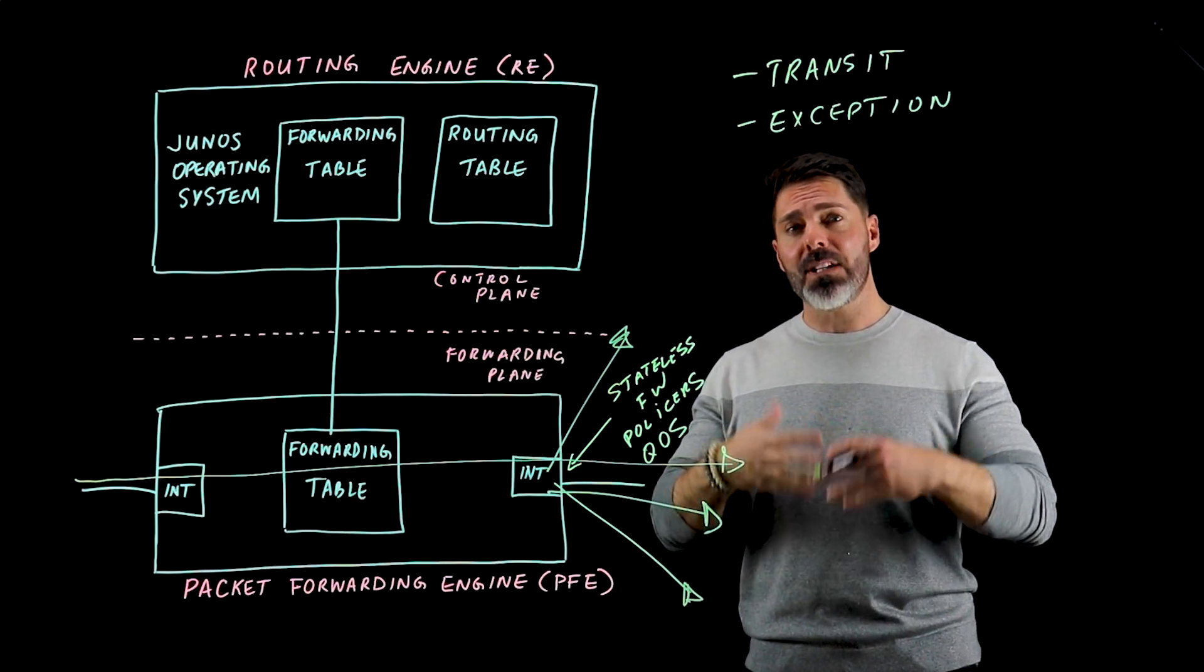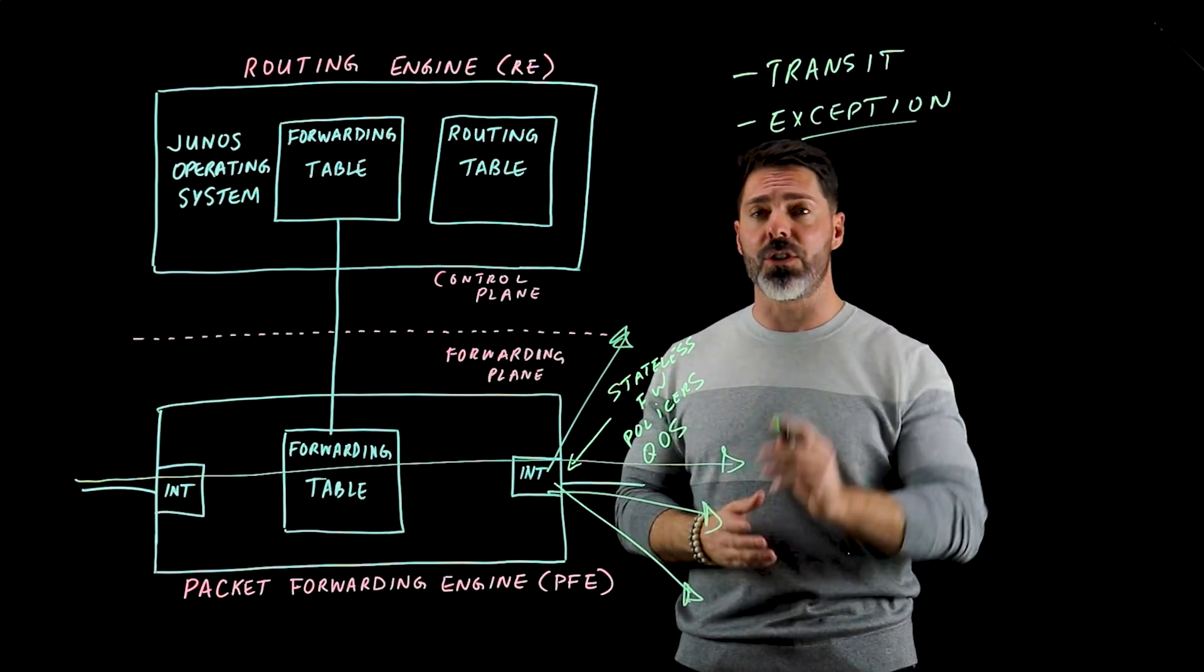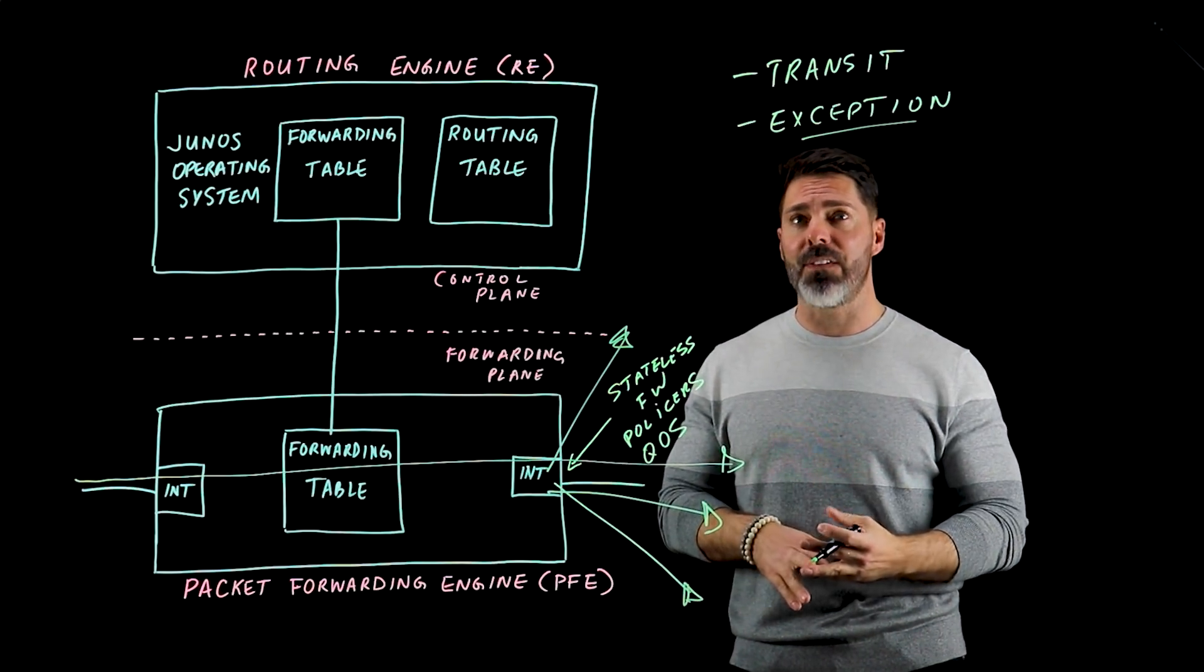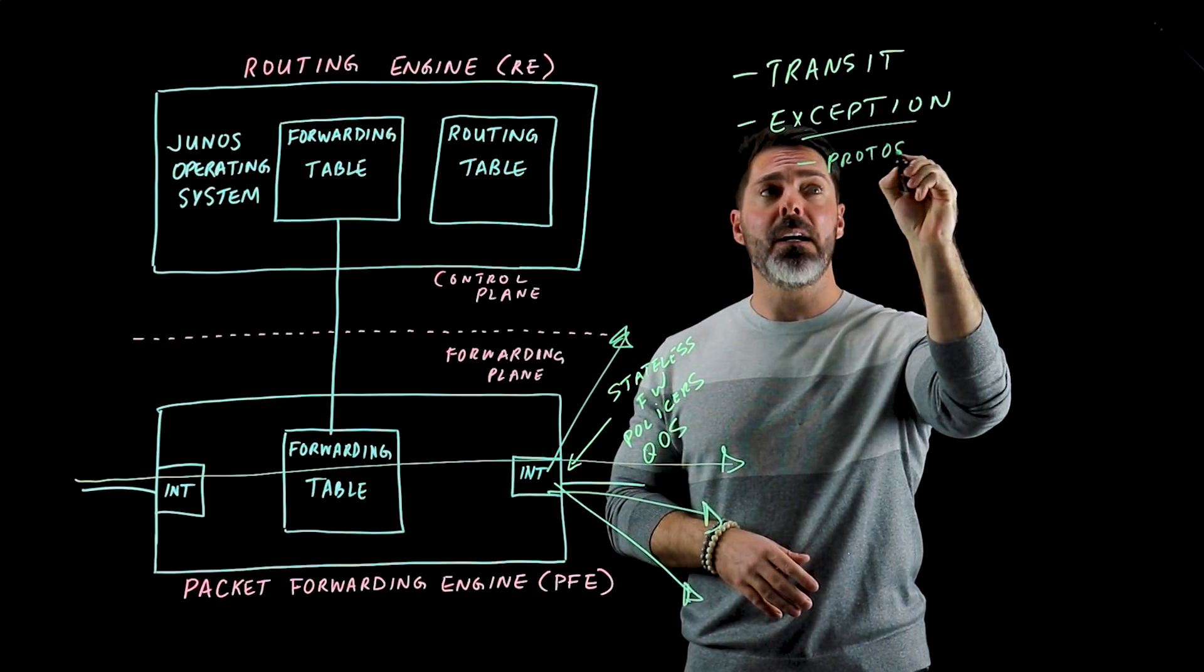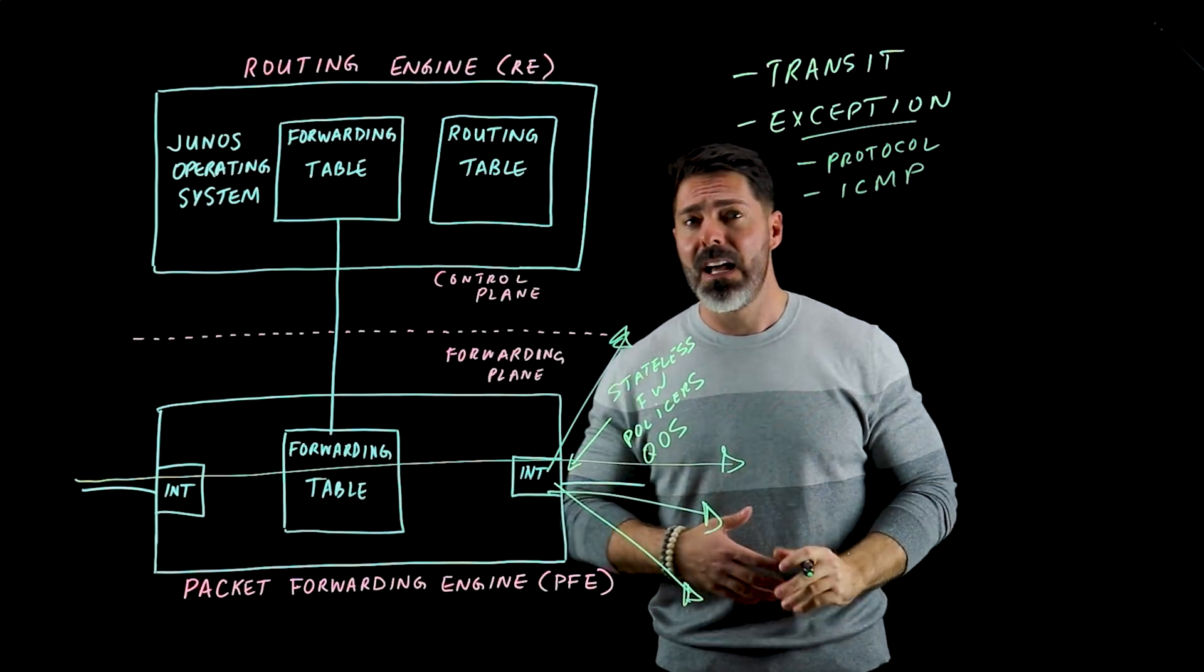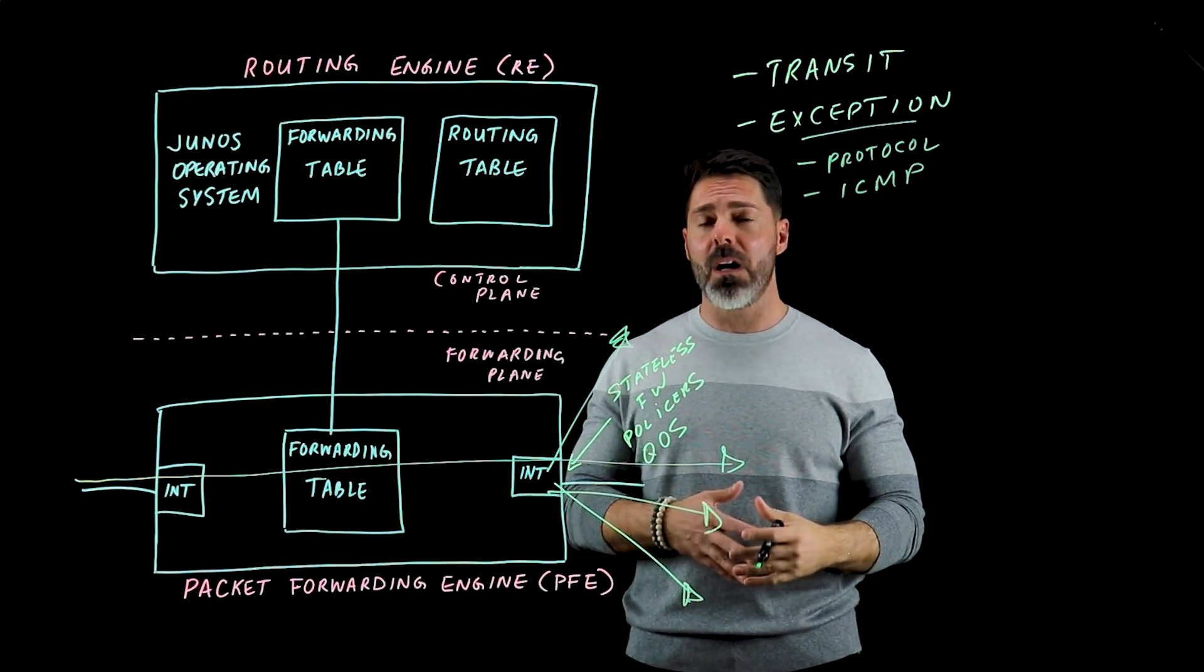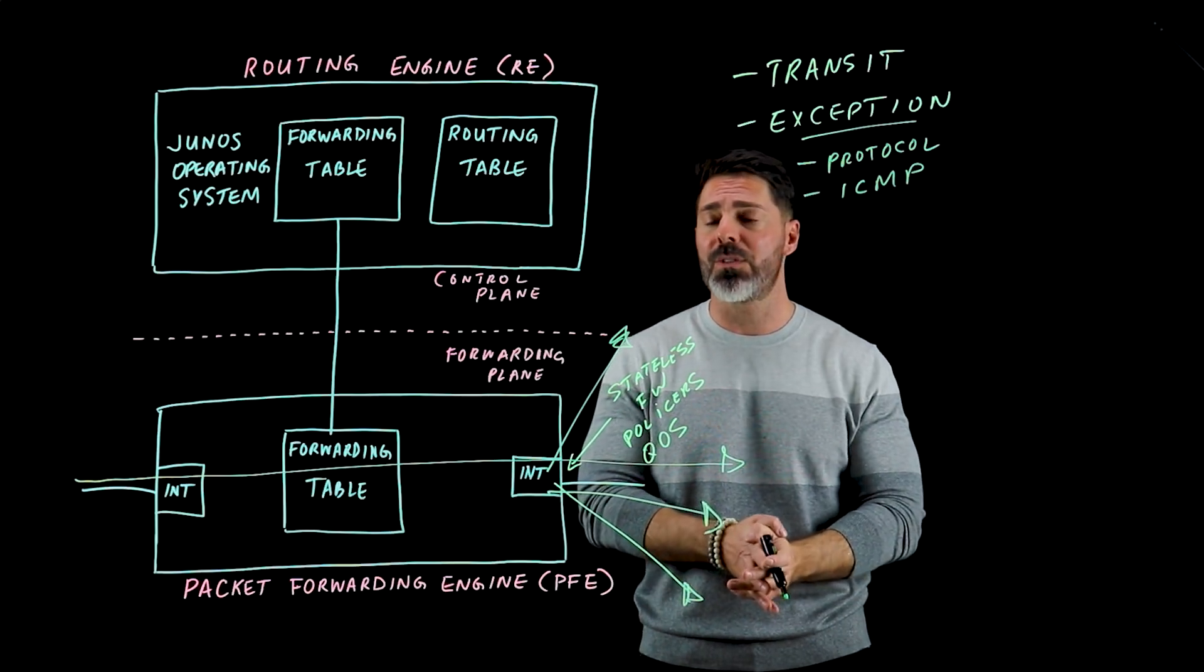The other type of traffic we might see on our routers is what's known as exception traffic. Exception traffic can be things like protocol updates, things like ICMP where we need to generate maybe some type of response, an echo response—say it's ping traffic coming through or a traceroute or any of those types of things.